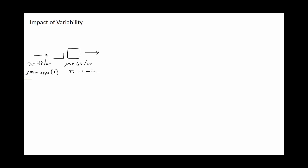For this module, the metrics of interest include the utilization, the number of entities in the system at steady state, and the time that entities spend in the system at steady state.